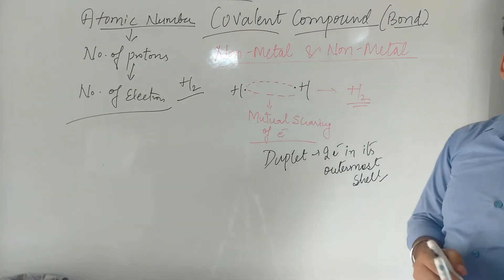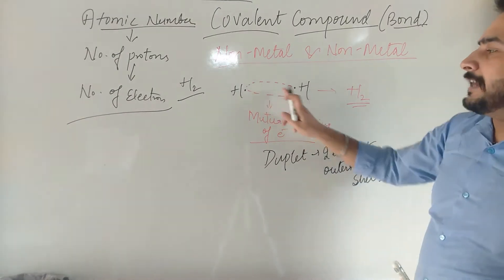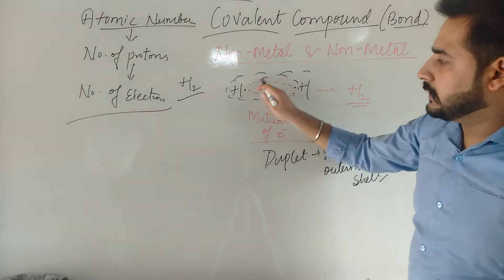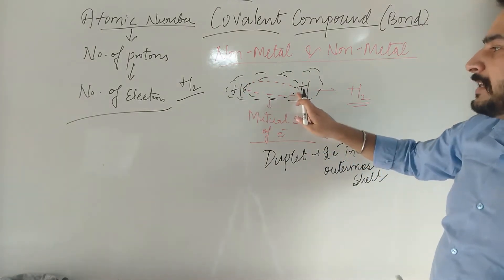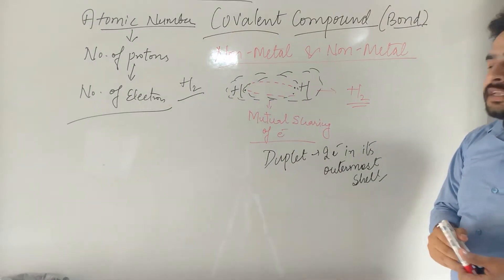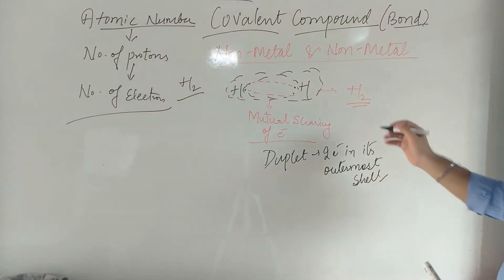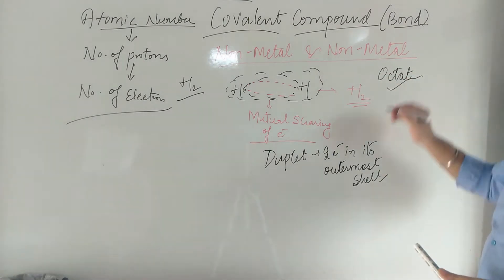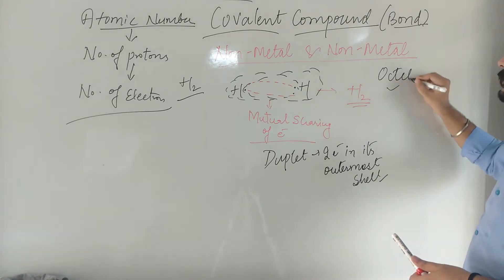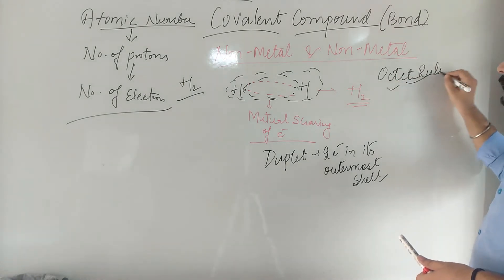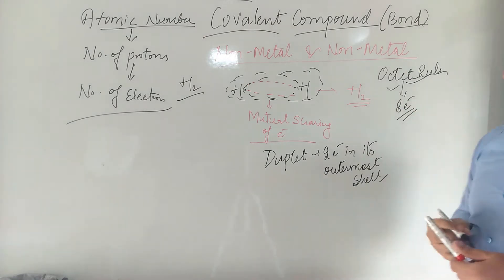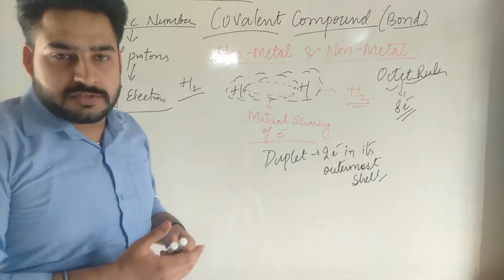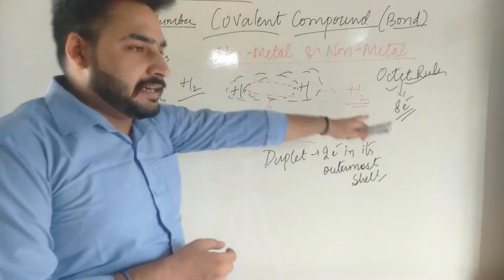Hydrogen wants to complete its duplet. With the sharing of electrons, hydrogen easily completes its duplet. Both hydrogen atoms complete their duplets. Normally, every element wants to complete its octet — this is called the octet rule. Octet means 8 electrons in the outermost shell. This is the reason why metals and non-metals lose or gain electrons — to complete their octet.